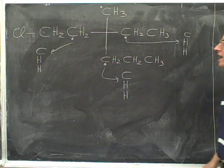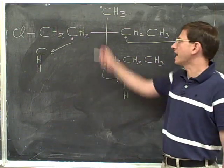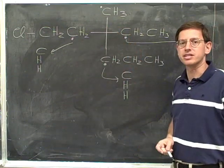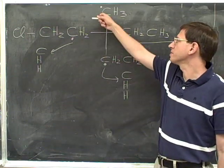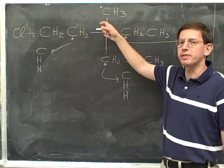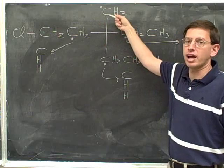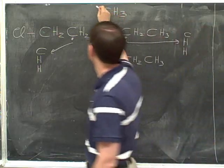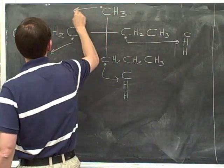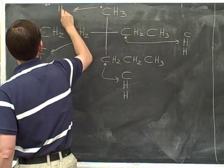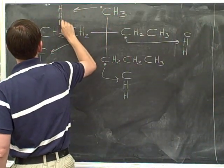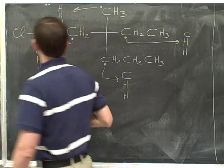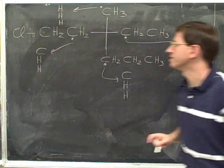Finally, what are the three atoms that the carbon at the top is connected to? This carbon at the top is simply connected to three hydrogens — hydrogen, hydrogen, hydrogen.